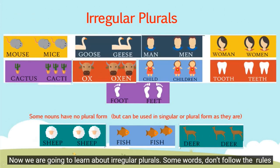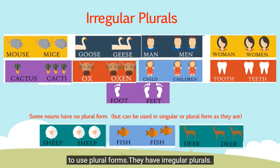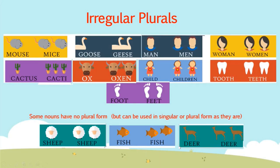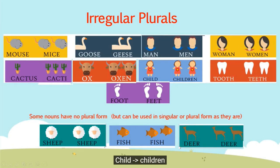Now we are going to learn about irregular plurals. For some words, they do not follow the rules — they have irregular plural forms. For example: mouse becomes mice, moose becomes geese, man becomes men, woman becomes women, cactus becomes cacti, ox becomes oxen, child becomes children, tooth becomes teeth, foot becomes feet.